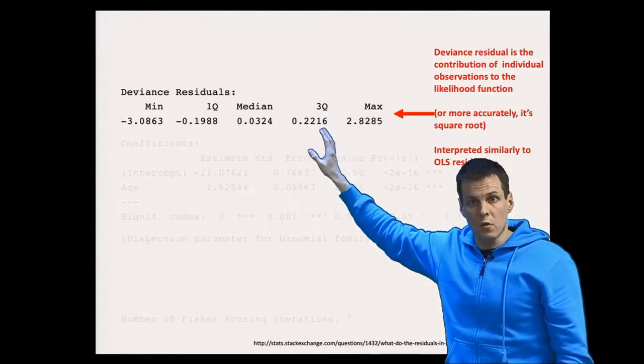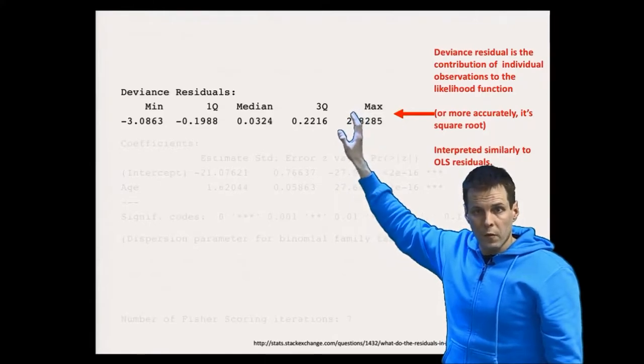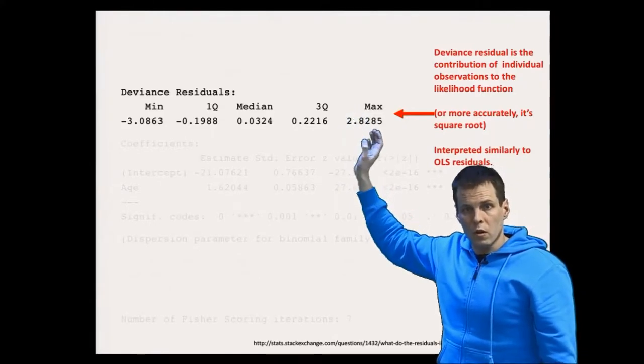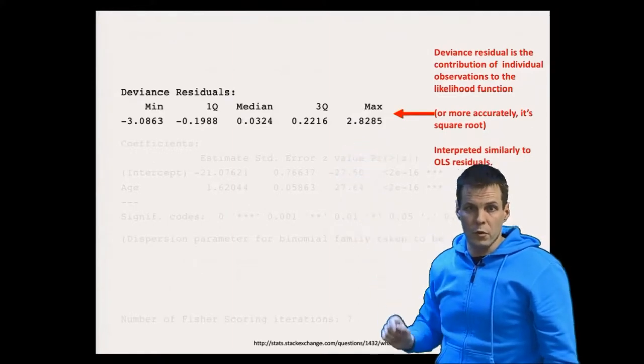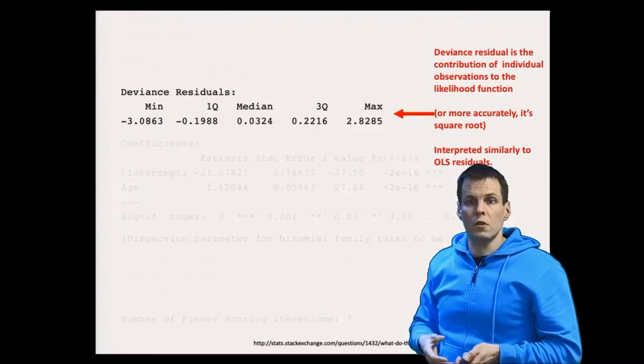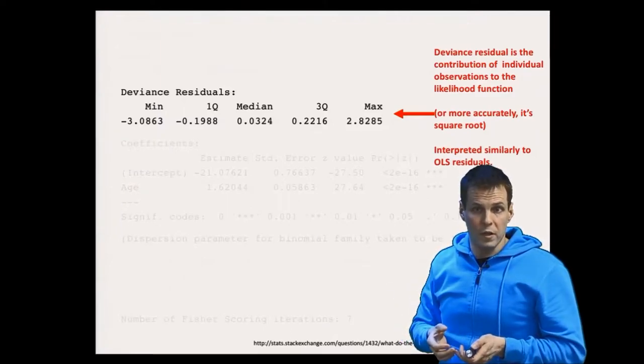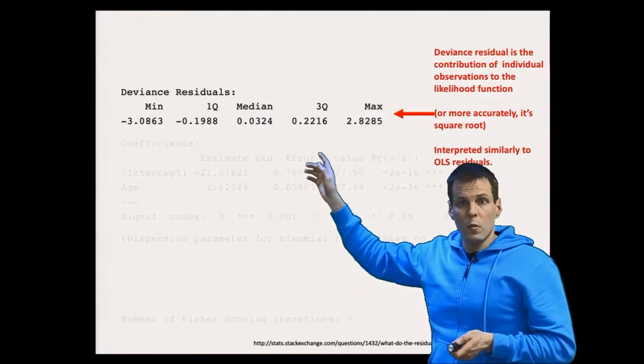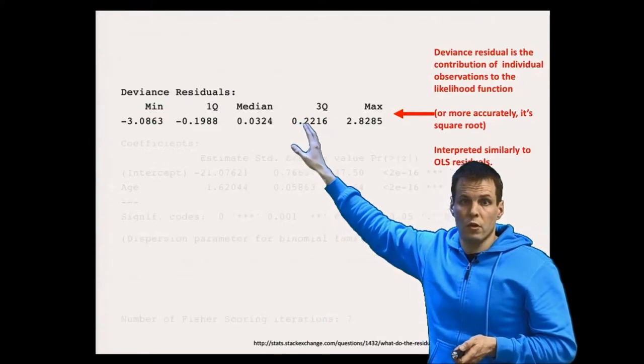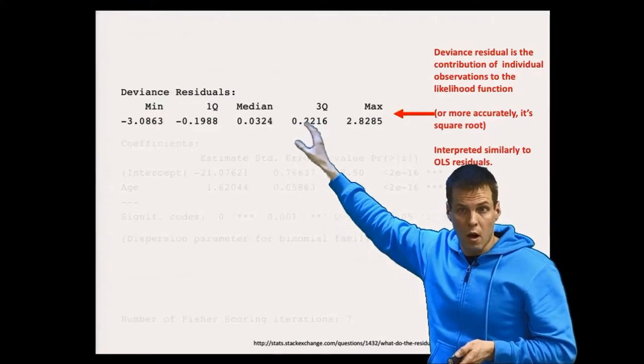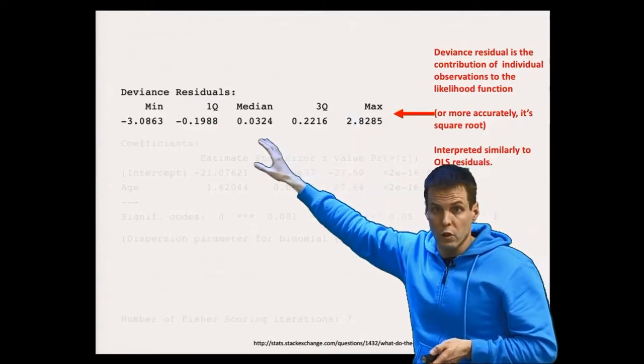The deviance residual, or the square of deviance residual, also quantifies how much each observation contributes to the actual likelihood value. So they can be used as influence statistics, similarly to residual and R squared. One way of doing diagnostics to GLMs is that when you have large sample, you can check which observations have a large deviance residual and whether the deviance residuals are normally distributed or not.